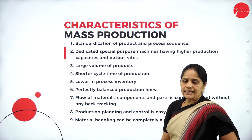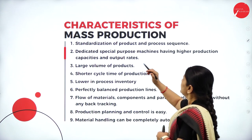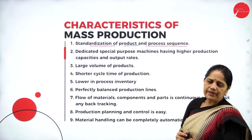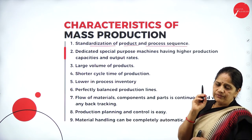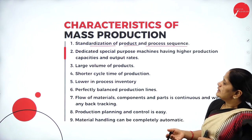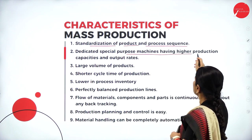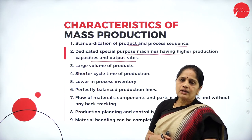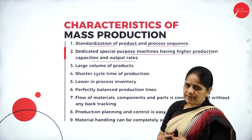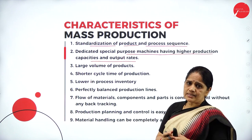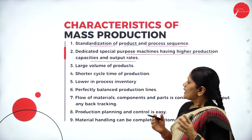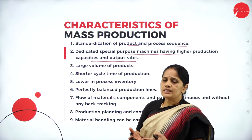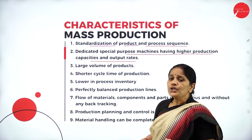The characteristics of mass production include, first, standardization of product and process sequence — standard methods are used for both the product and the process. Second, dedicated special-purpose machines having higher production capacities and output rates are used, resulting in higher production capacity and higher output volumes.